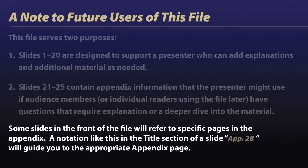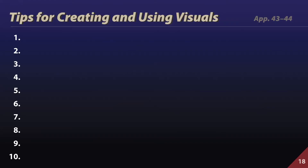Let's take one more look at that — this is absolutely key. Let's imagine I have 10 tips I want to explain for creating and using good visuals. I often show the empty list — one through ten — just to let people know right away that I have a list and this is how long it is, and now let's go through it. Notice once again, up in the title section of this slide, it says APP 43 and 44. That's telling a future user that if they want to see a detailed explanation of my slide, they can go to slide 43.